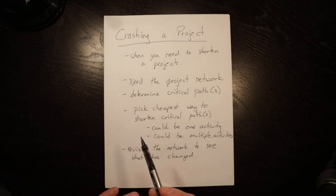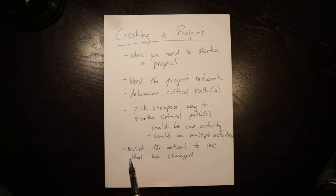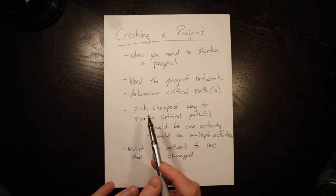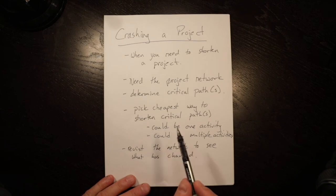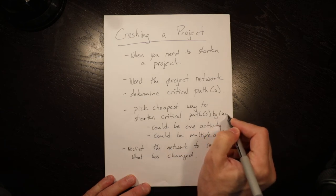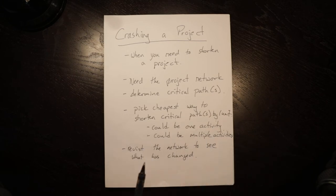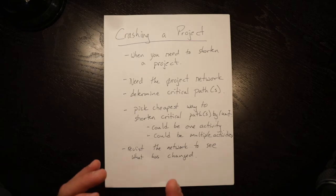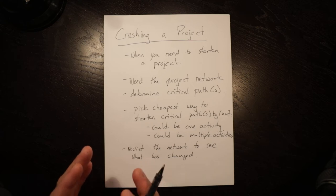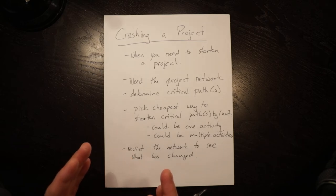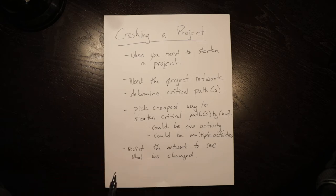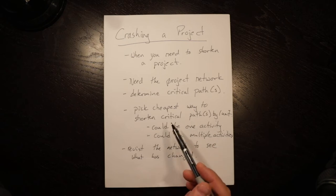In order to crash a project clearly you need a project, the project network, and you need to determine the critical path or paths. Then when you have a critical path you shorten by the first time unit. You don't shorten them all at once. You pick the cheapest way to shorten the critical path by one unit. It could be one activity if you have multiple critical paths, it could be multiple activities.